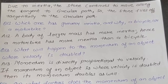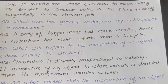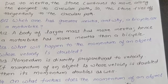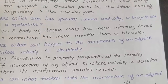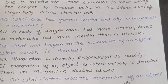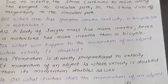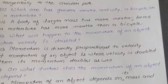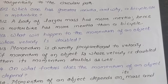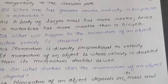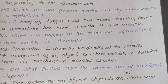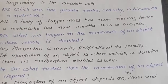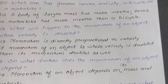Question 12: Which one has greater inertia and why — a bicycle or a motorbike? Answer: A body of larger mass has more inertia. Hence a motorbike has more inertia than a bicycle. Question 13: What will happen to the momentum of an object whose velocity is doubled?